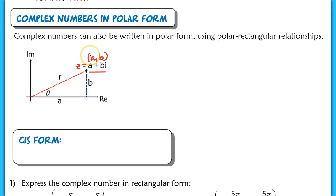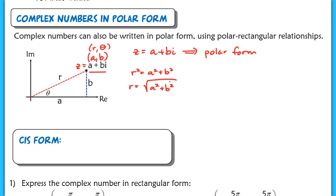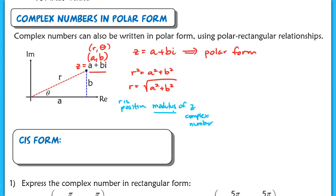We can also represent that same coordinate A, B in polar form as R, theta. Based on the Pythagorean theorem, R squared equals A squared plus B squared, or R equals the square root of A squared plus B squared. In polar form we consider R to always be positive, and R is called the modulus of Z. This vocabulary term will be important when we go to multiplying and dividing complex numbers.